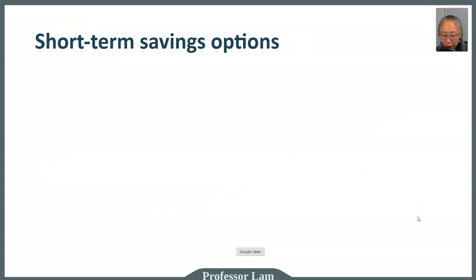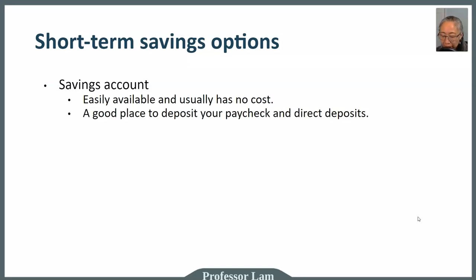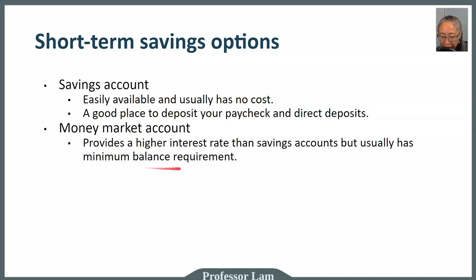Finally, let's take a look at some short-term savings options. This is money that you want to keep liquid — meaning available for use both as an emergency fund or for transactions. The easiest option is a savings account, which usually has no fees and is a good place to put your paycheck and direct deposits. However, savings accounts typically don't pay a very high interest rate. Money market accounts work pretty much like a savings account, but they typically have a higher minimum balance requirement. Savings accounts often have very low or zero minimum balance requirements, while money market accounts will charge a fee if you don't meet the minimum balance but do offer a higher interest rate.